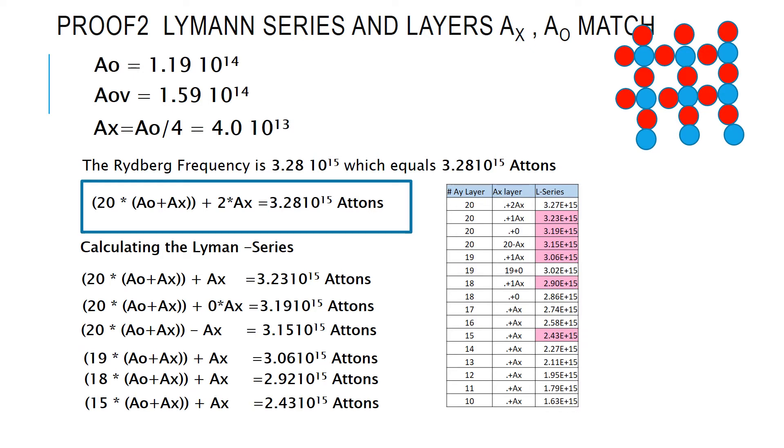So, another really, I think, compelling proof is that you can actually recreate or calculate the Lehman series just by adding a number of layers. So, first of all, 20 of the A0AX layers plus one AX creates the Rydberg frequency of 3.2810 to the power of 15, which equals 3.2110 to the power of 50 atoms. Remember, I have shown in the very first videos that the frequency directly correlates to the number of atoms. So, one hertz is one atom. So, the simple conclusion here is that with the A0AX layer, we can replicate exactly the Lehman series.